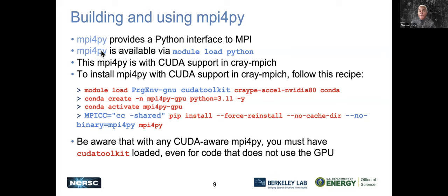MPI4Py is already loaded when you do 'module load Python'. Within CUDA, we have MPI support using Cray MPICH for our system. If you want to install MPI4Py with CUDA support, we outline steps to get that going. You enter 'module load PrgEnv-gnu', the CUDA toolkit, and specify other modules and libraries. Then use the 'conda create' command with appropriate components, 'conda activate', and then 'pip install' for packages like MPI4Py.